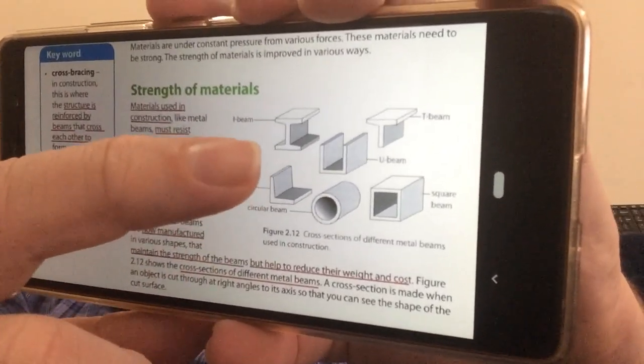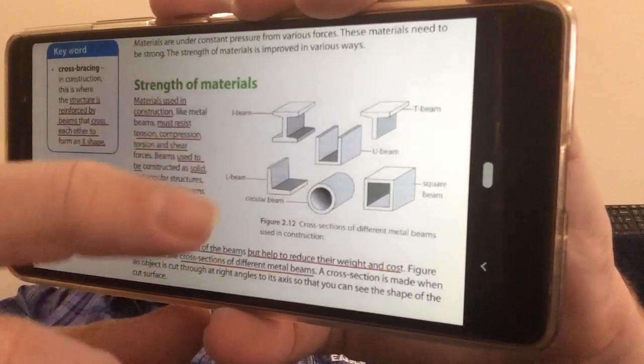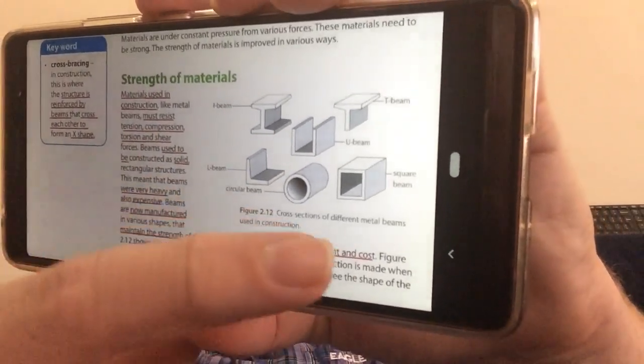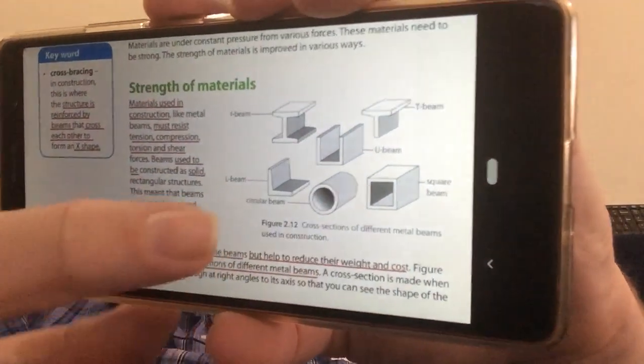So we've got examples of things like I-beams and U-beams and L-beams and circular beams, square beams and T-beams.